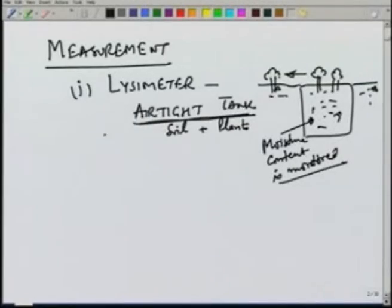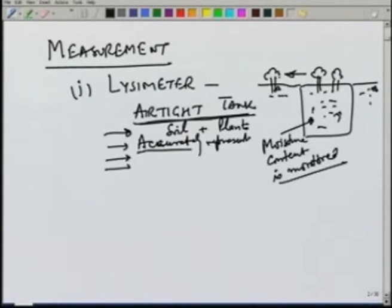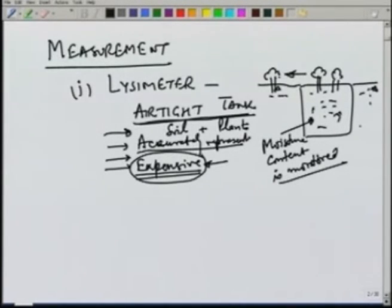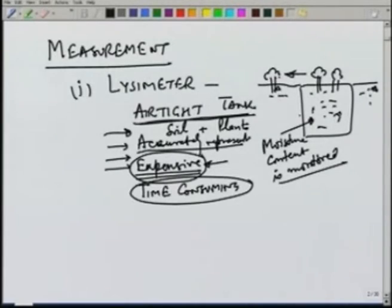There are some precautions we have to take. First, the lysimeter should accurately represent the surrounding area — accurate representation of the surrounding soils is a requirement; the plants and soil should be similar. It is naturally expensive to install and monitor, so typically it is not used very often. But if we are interested in high accuracy results and not concerned too much about cost, we can install lysimeters in the field to measure evapotranspiration. It is also time consuming because we have to keep measuring the evapotranspiration on a daily or monthly basis, whatever time period we are interested in.